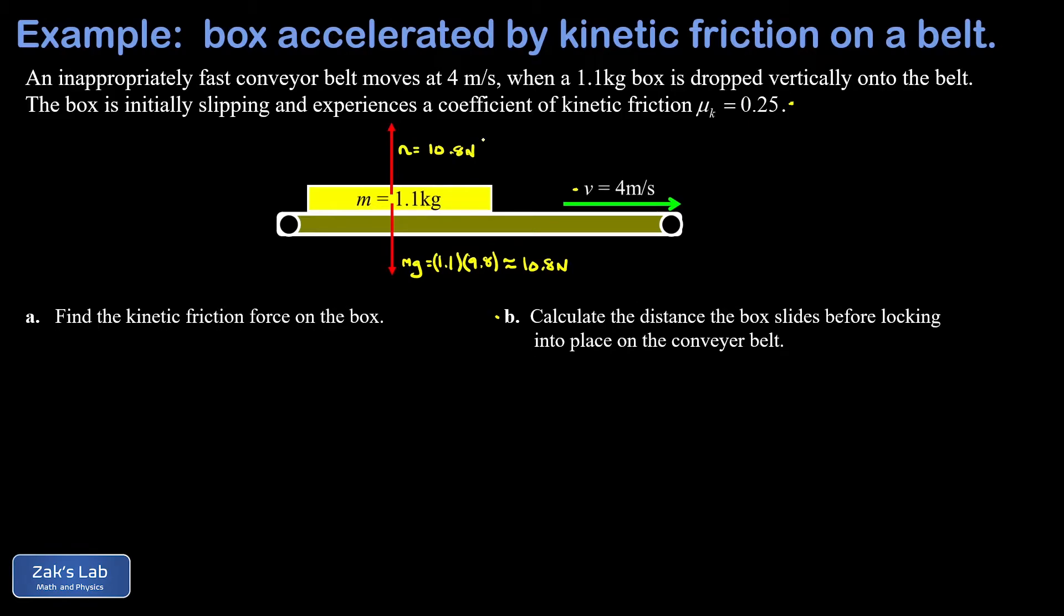Next, we add the friction force to the diagram. That friction force has a magnitude of μₖ (the coefficient of kinetic friction) multiplied by the normal force. To answer part a, we plug in μₖ = 0.25 and normal force = 10.8 N, arriving at a friction force of 2.70 newtons.